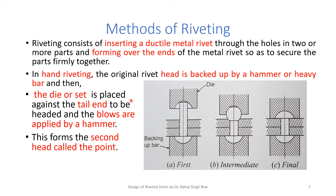Next are the methods of riveting. Riveting consists of inserting a ductile metal rivet through holes in two or more parts and forming over the heads of the metal rivet so as to secure the parts firmly together. In hand riveting, the original rivet head is backed up by a hammer or a heavy bar. As shown in figure A, a backing-up bar has been used to support the factory head. The die or set is placed against the tail end to be headed, blows are applied by a hammer, leading to deformation of the tail and resulting in the formation of the second head called the point.